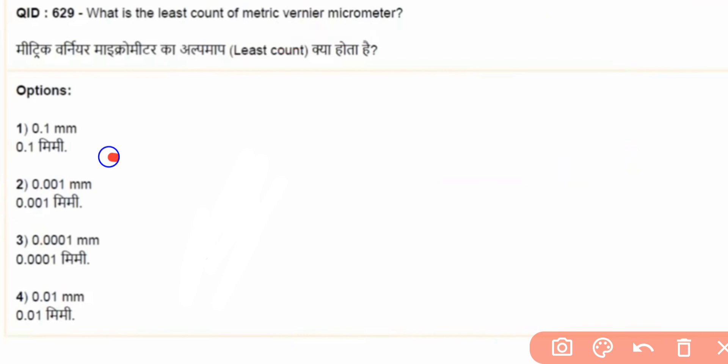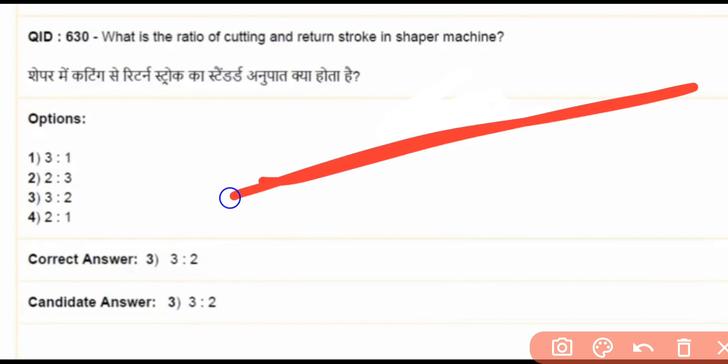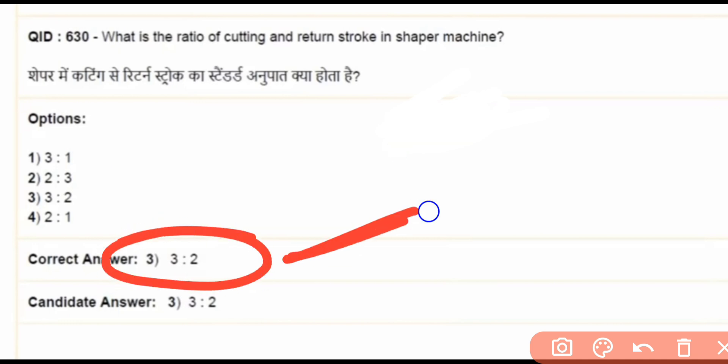What is the ratio of cutting and return stroke in shaper machine? This is the question. What is the ratio of 3 to 1, 2 to 3, 3 to 2, or 2 to 1? The answer is 3 to 2.